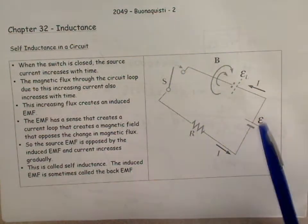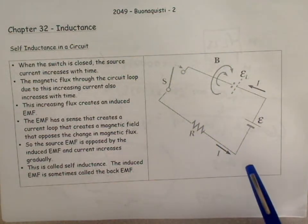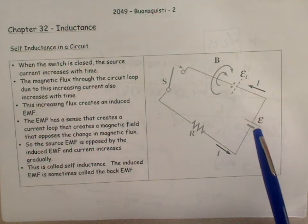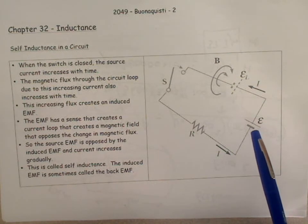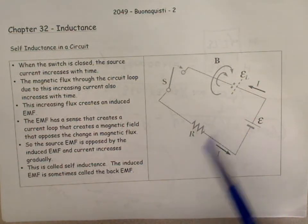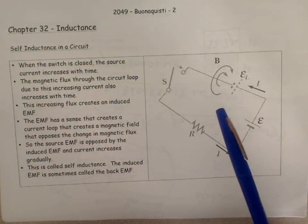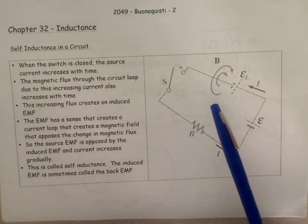Current flows around the circuit from positive to negative, and that increasing current causes a magnetic field to increase. The increasing magnetic field causes a greater number of flux lines to go through the center of the circuit.